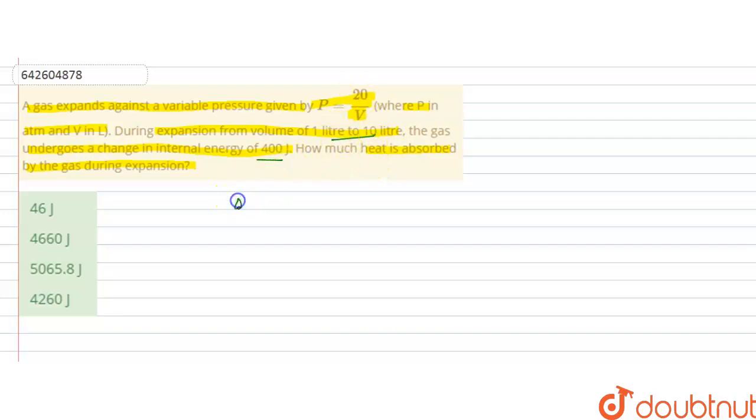As ΔU, that is equal to ΔQ plus W. Now we are asked in this question to calculate ΔQ, that is the heat that is absorbed, so it will be ΔU minus W. Now we are given ΔU, that is change in internal energy, 400 joules. But we have to calculate the work done.